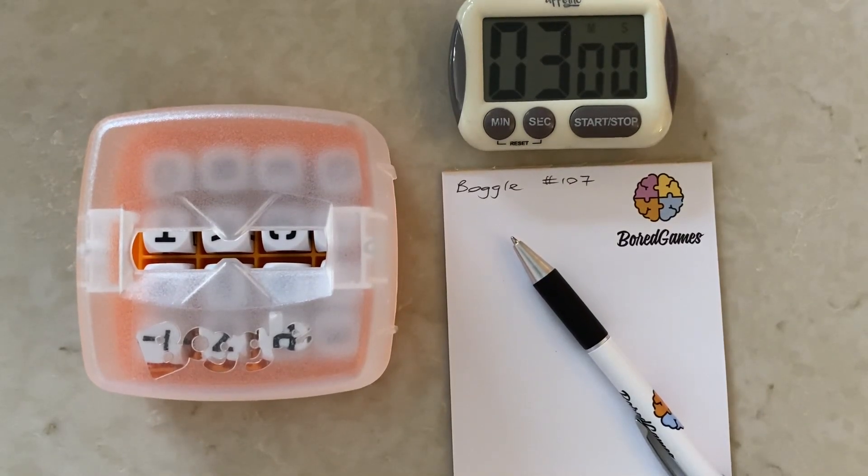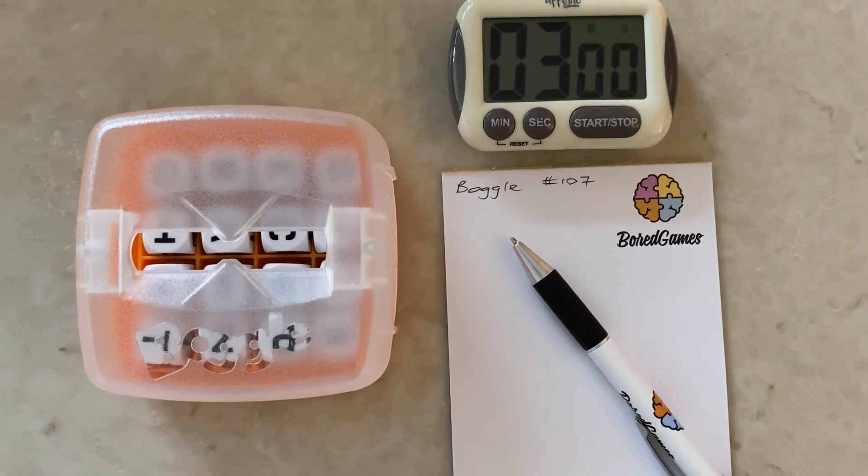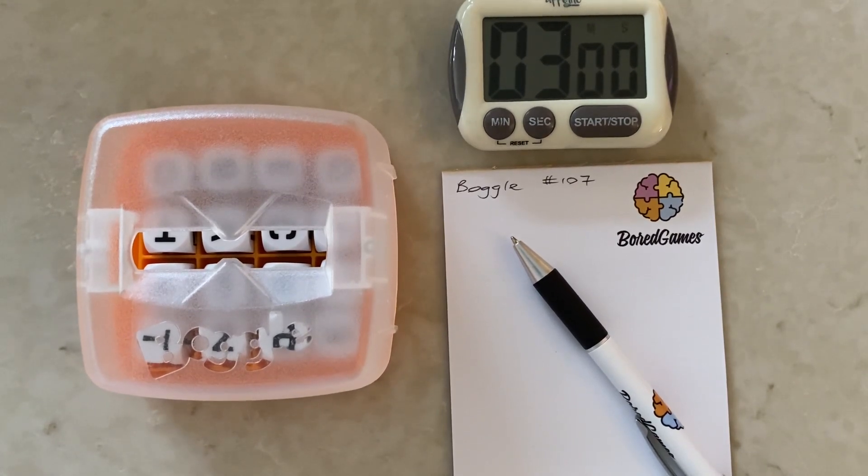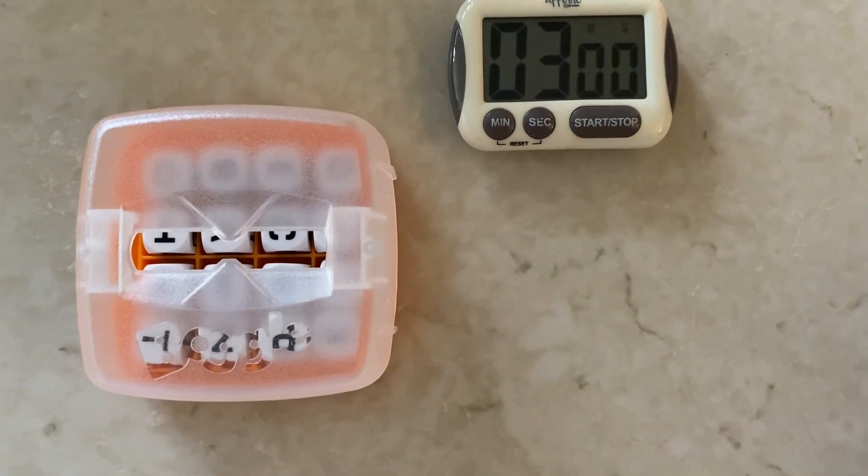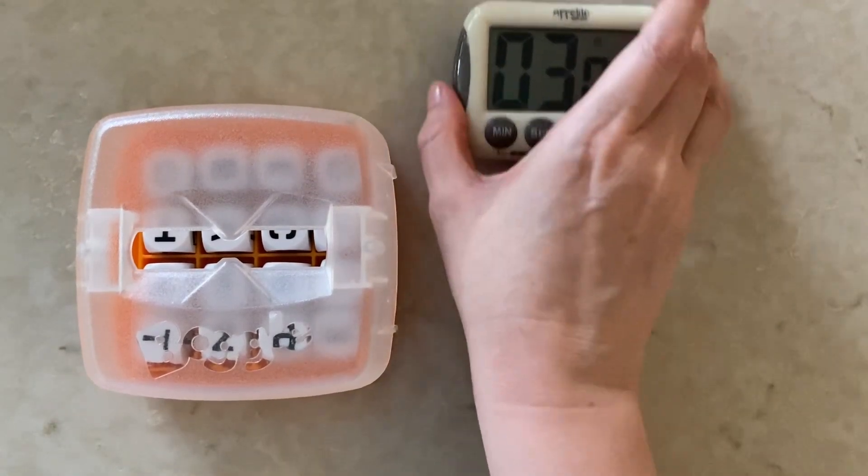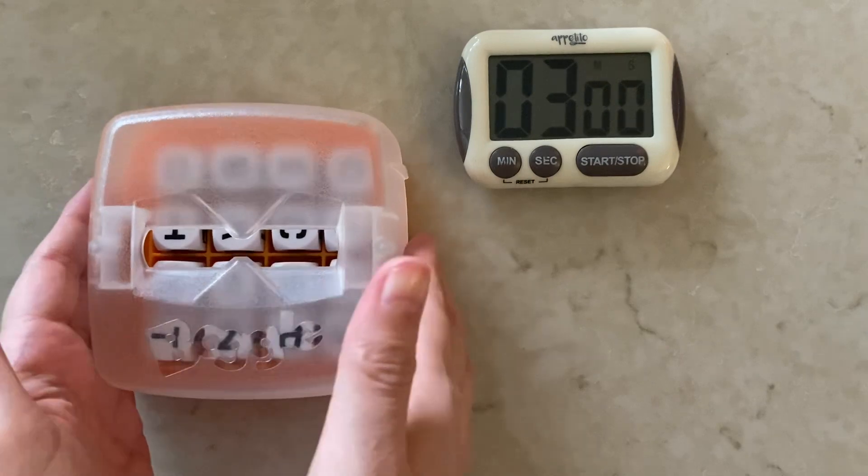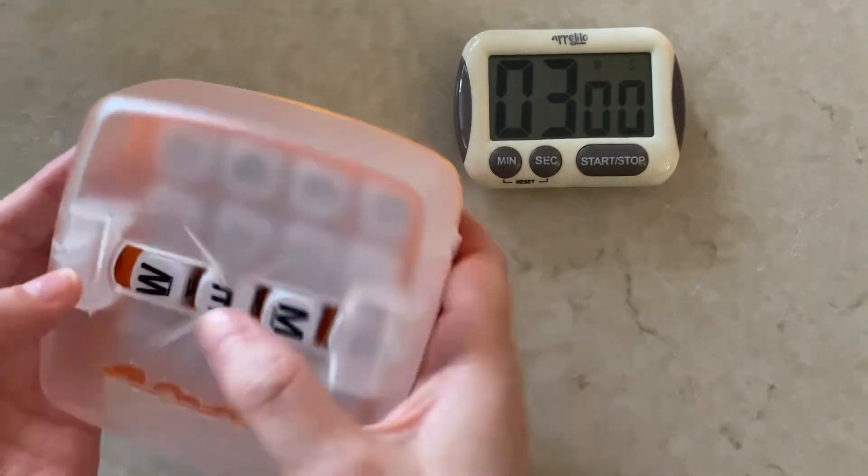Hi there, thanks for joining me on Board Games. My name is Rebecca and this is Boggle game number 107. If you're playing along at home, please remember that I make my words off-camera but I do say them out loud. We'll have three minutes on the clock to make as many words as we can from this grid. Let's get going. Best of luck.